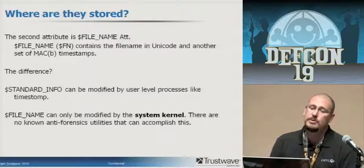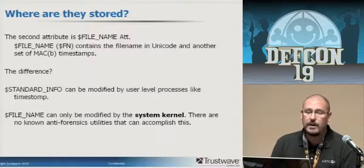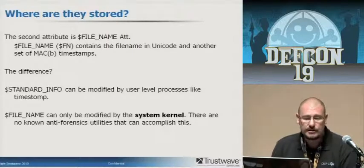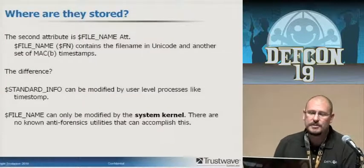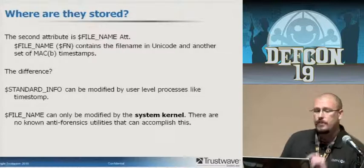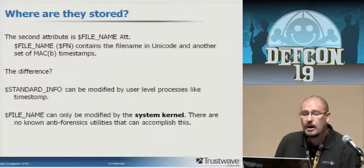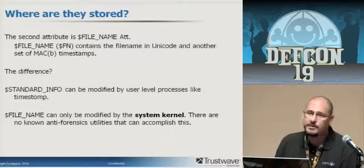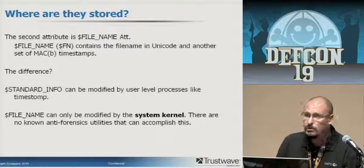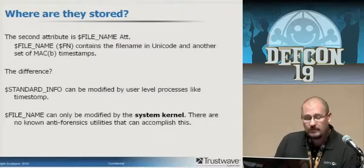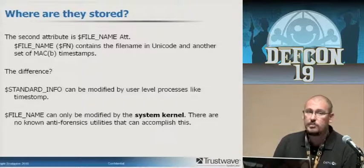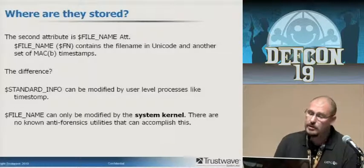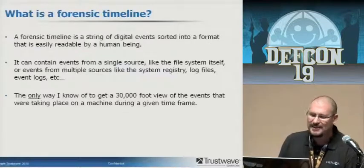The second attribute is the dollar file name attribute, or dollar FN. It contains the file name in Unicode and another set of MACB timestamps. It doesn't contain nearly as much information as SI, but the important thing is it contains a second set of MAC timestamps. The difference: standard info can be modified by user-level processes like Timestomp or any other editor, Perl scripts, things like that. Dollar file name can only be modified by the system kernel. There are no known utilities that can accomplish this — anti-forensic or not. There's nothing out there right now.